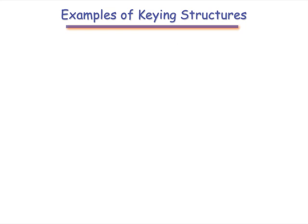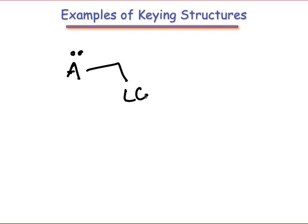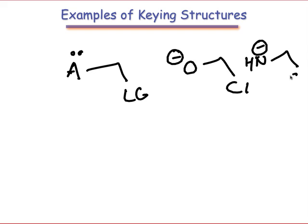Let's look at a couple of examples. A molecule that contains a lone pair adjacent to a good leaving group is primed to perform beta elimination. Examples of this structure include the tetrahedral intermediates of acyl and imine substitution, which I've drawn for you here.